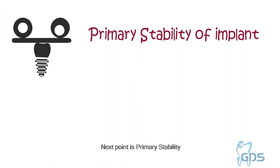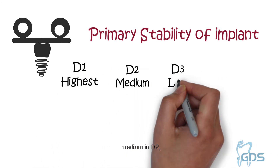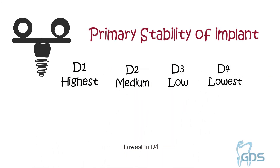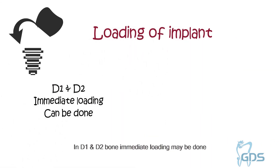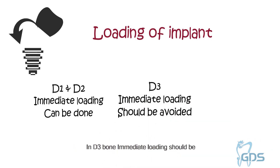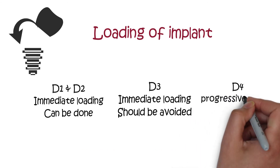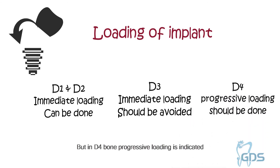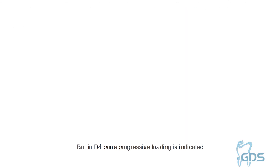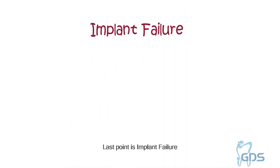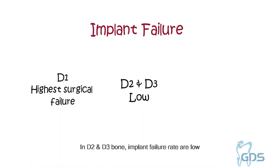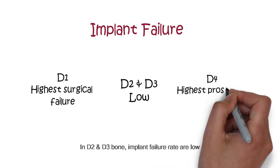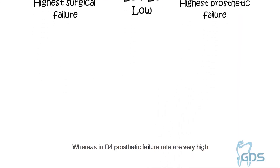Primary stability is highest in D1, medium in D2, low in D3, and lowest in D4. For loading protocol, in D1 and D2 bone immediate loading may be done. In D3, immediate loading should be avoided and progressive loading is optional, but in D4 bone progressive loading is indicated. Finally, regarding implant failure: in D1 bone surgical failures are highest, in D2 and D3 bone implant failure rates are low, whereas in D4 prosthetic failure rates are very high.